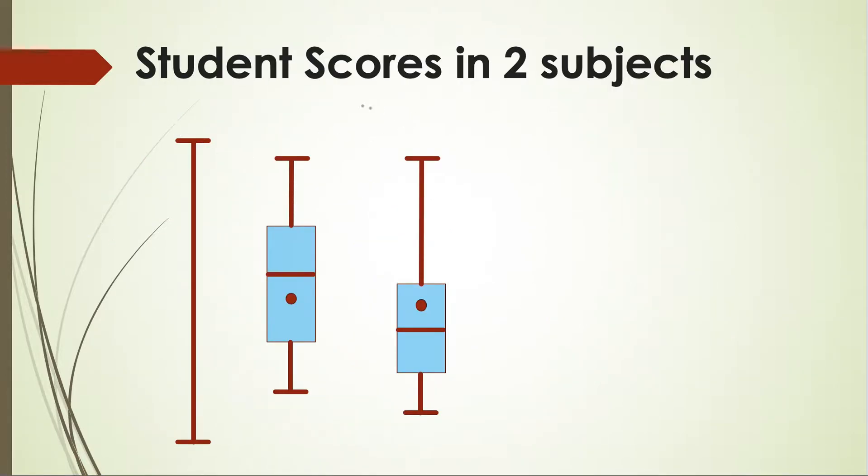Now let's see an example where we are comparing the student scores in a class in two subjects, for let's say Maths and this is Physics. And this is the scale. Let's say minimum marks is zero, maximum is 100.